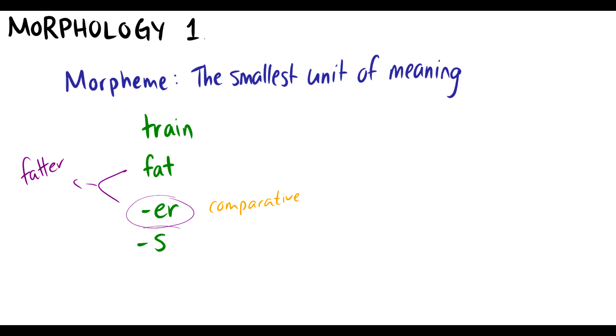And there's also the -s morpheme which is the plural morpheme. So you can combine train with the plural morpheme and you can make trains. So these have the smallest unit of meaning. We may never see some of these morphemes on their own like you would never just see -er in a sentence all by itself. You have to attach it to a word but it still has a unit of meaning attached to it.